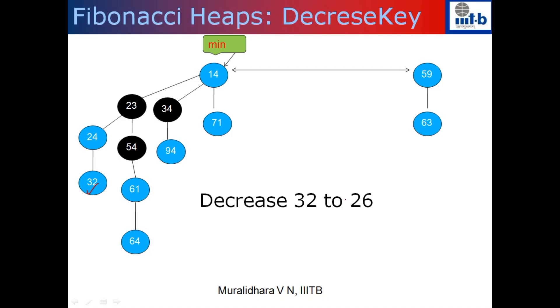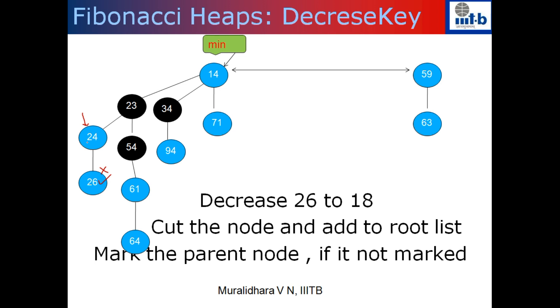We'll do something else so that the amortized cost of the decrease-key operation in Fibonacci heap will be a constant. Suppose I am given a pointer to node 32 and I have to change the value of 32 to 26. I go and change the value to 26. After the decrease-key, what we generally do in any heap is bubble-up, but we cannot afford that in Fibonacci heap. So I go to the parent and check whether the parent still has a smaller value. If so, we don't have to do anything — our algorithm terminates. That's precisely what happens here: I change 32 to 26 and stop, because there's no violation of the heap property.